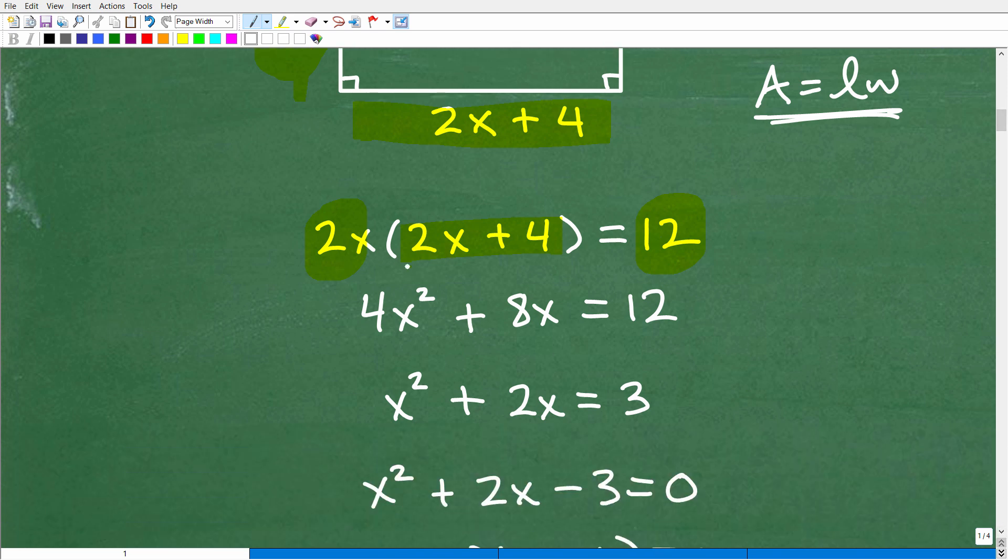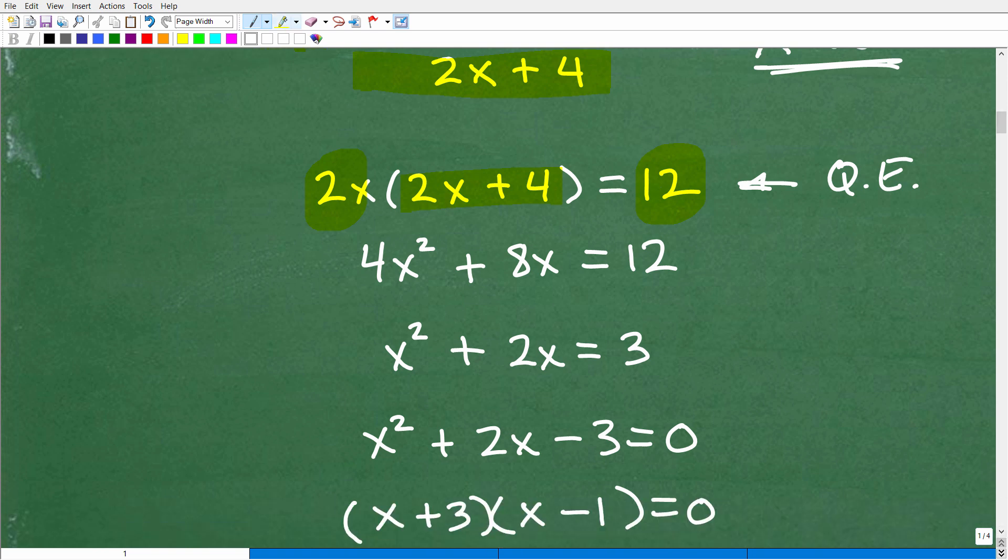So we have 2x times 2x plus 4 is equal to 12. At this point, you're going to need to know how to solve an equation like this. So what type of an equation is this? Hopefully you can see we're getting an x squared over here. So this is actually a quadratic equation. So you're going to need to know how to solve a quadratic equation. So let's go through it. So we're going to have 2x times 2x gives us a 4x squared. 2x times this 4 gives us an 8x, and then we have 12.